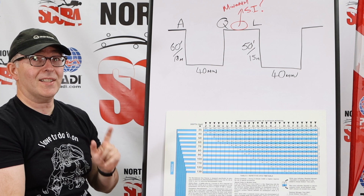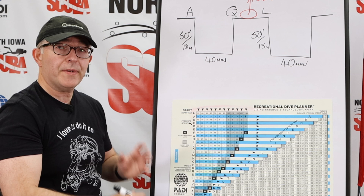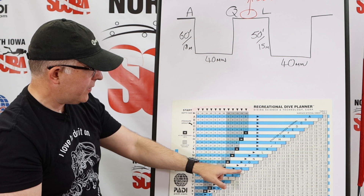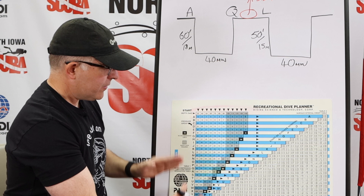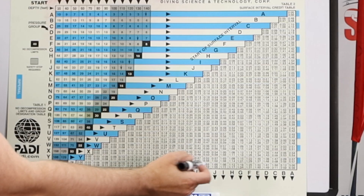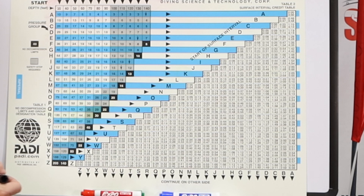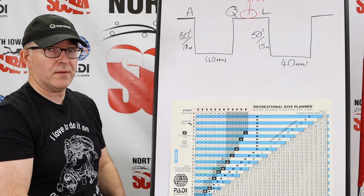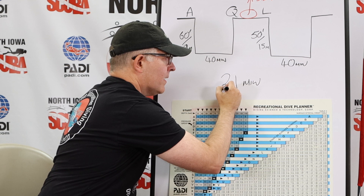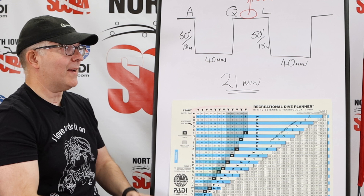So how do we figure out what this surface interval needs to be to change us from a Q to an L diver? We've flipped our RDP over and now we're looking at table two, the surface interval table. We know that when we got out of the water we are a Q diver — that is the start of the surface interval. We know that at the end of the surface interval we need to be an L diver to allow us to make a 50-foot dive for 40 minutes. We find where Q and L intersect — along the bottom is the ending pressure group — so Q to L gives us a box that says 21 to 25 minutes. We want the minimum surface interval, so we choose 21 minutes. That is how we calculate the minimum amount of time you have to be out of the water to make a subsequent dive to a specific depth for a specific amount of time.